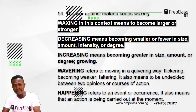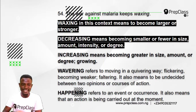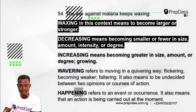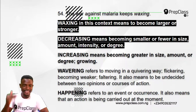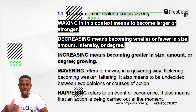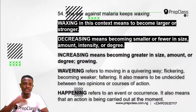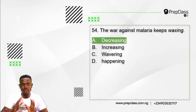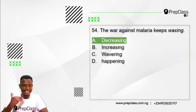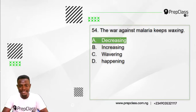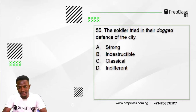So the answer to question 54 is option A: decreasing. In this context 'waxing' means to become larger or stronger, while 'decreasing' — the opposite — means becoming smaller or fewer in size, amount, intensity, or degree.